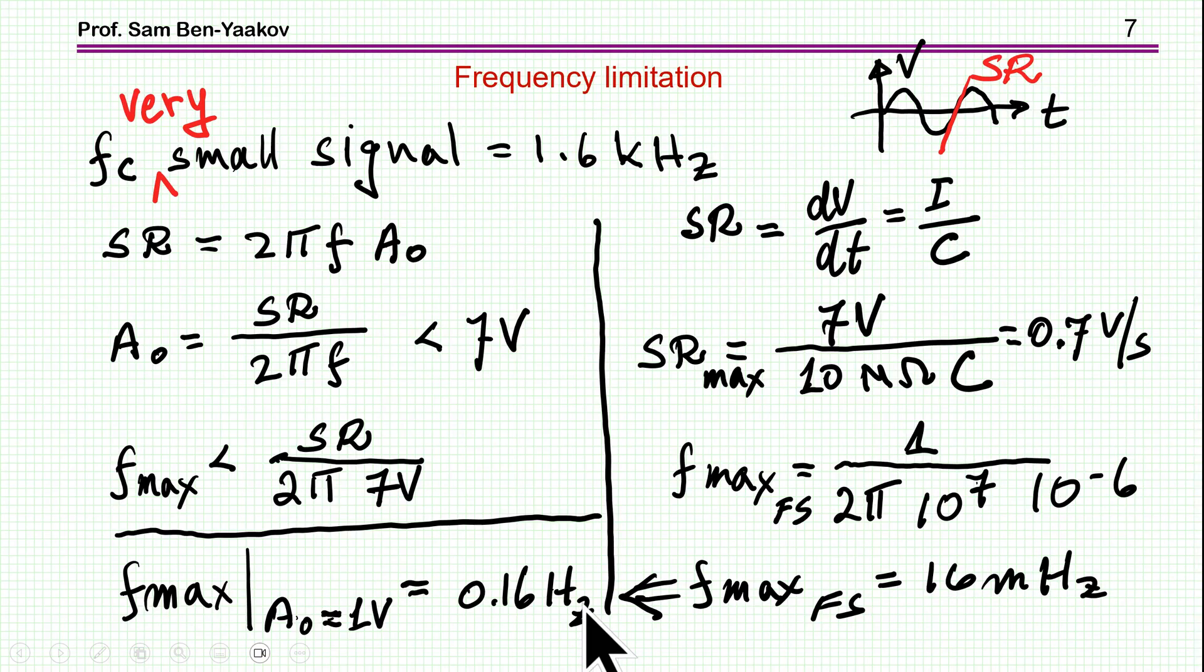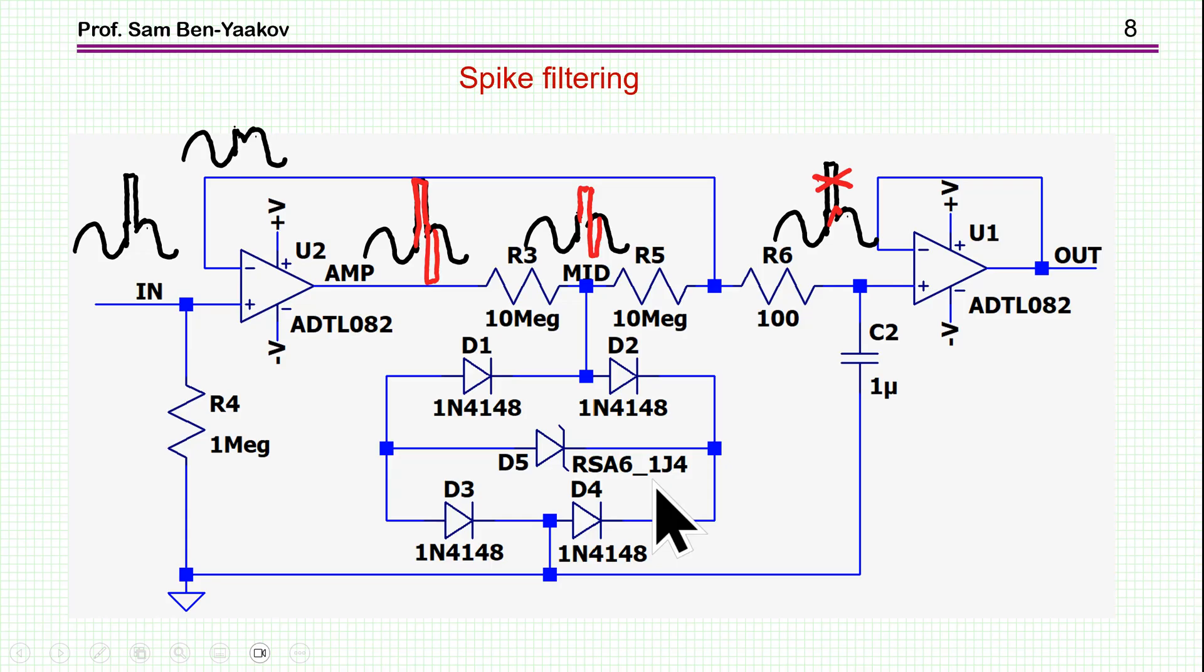So what would be the application of such a narrow bandwidth? So apparently, this would be for medical use, for EEG or ECG. That is, these signals have a very low frequency. And apparently, this circuit was designed for this purpose. We'll see it later on.